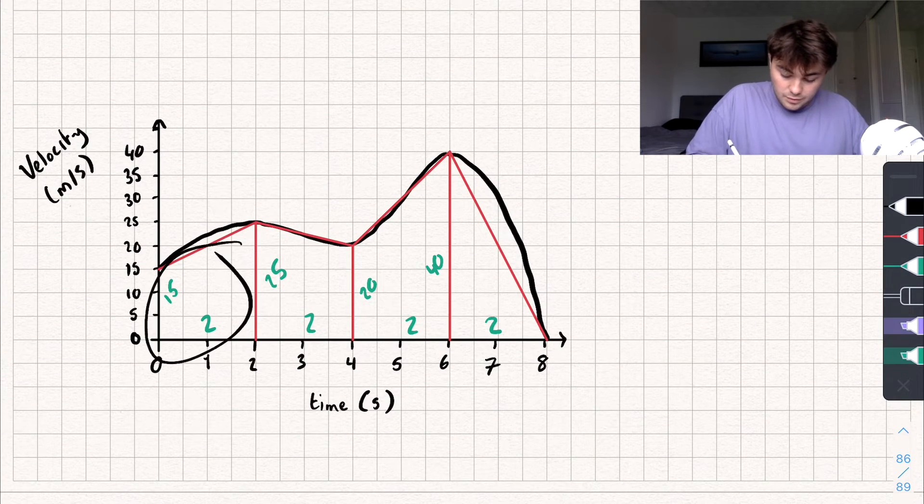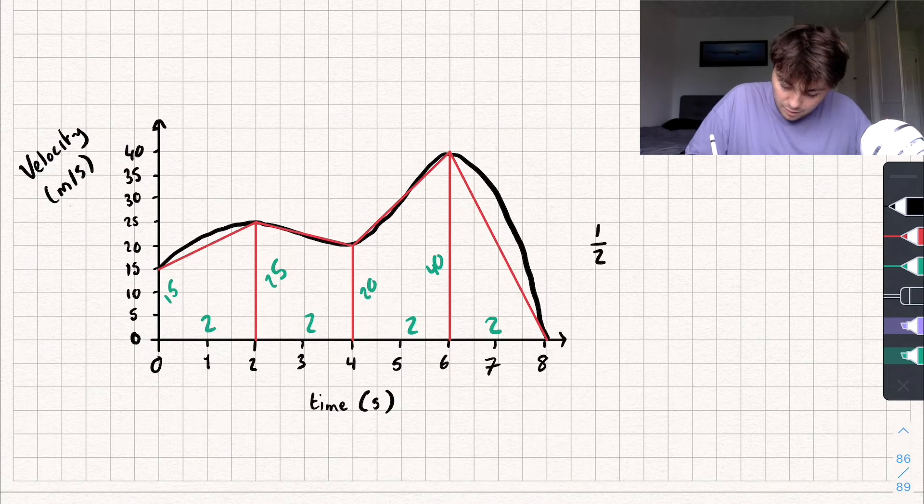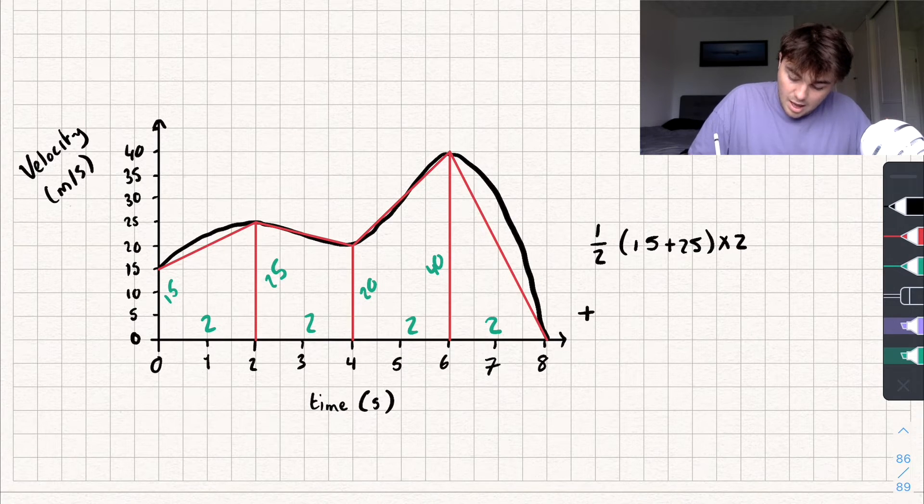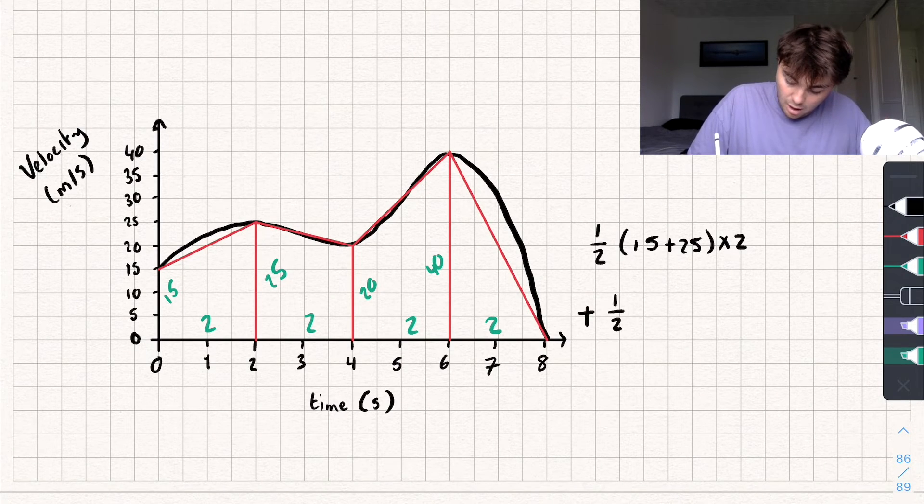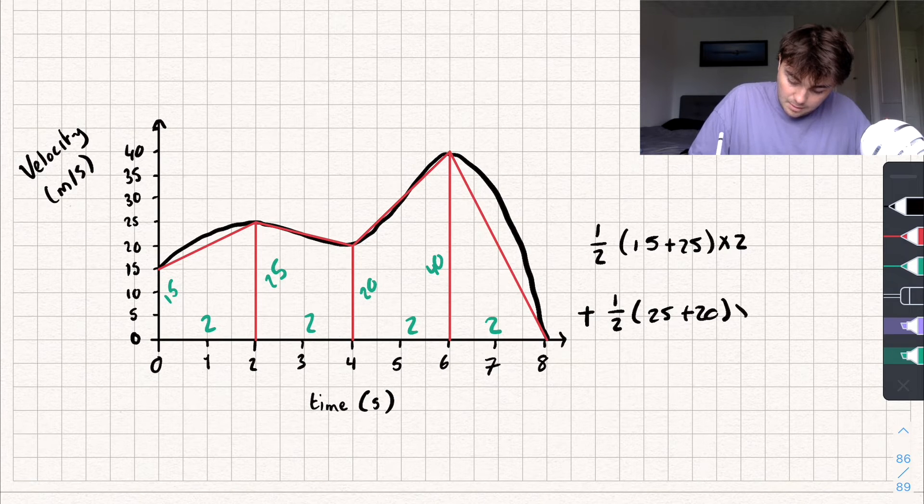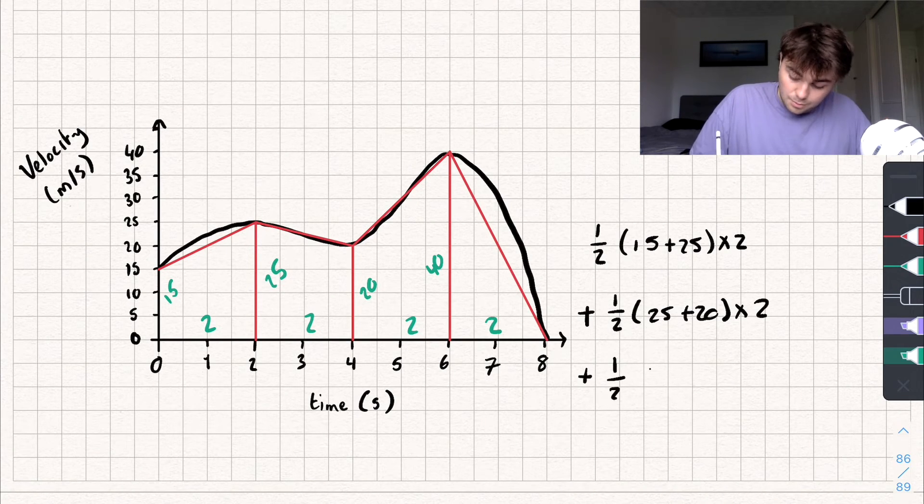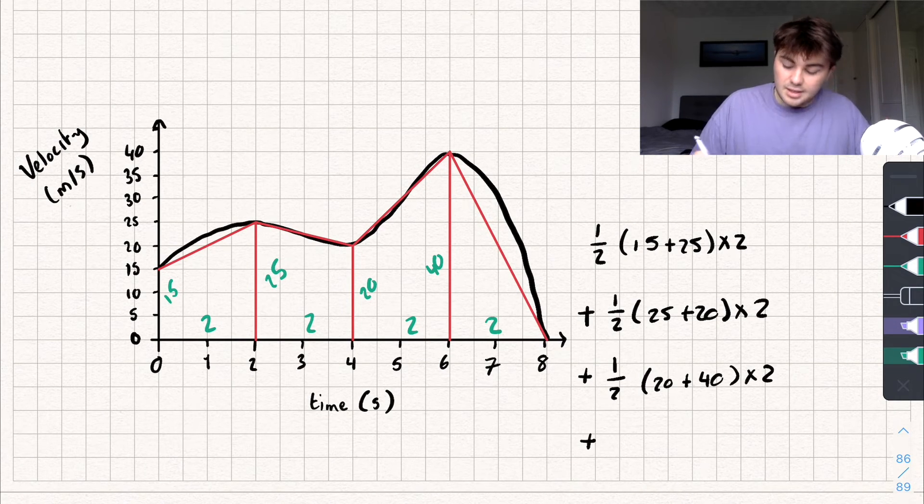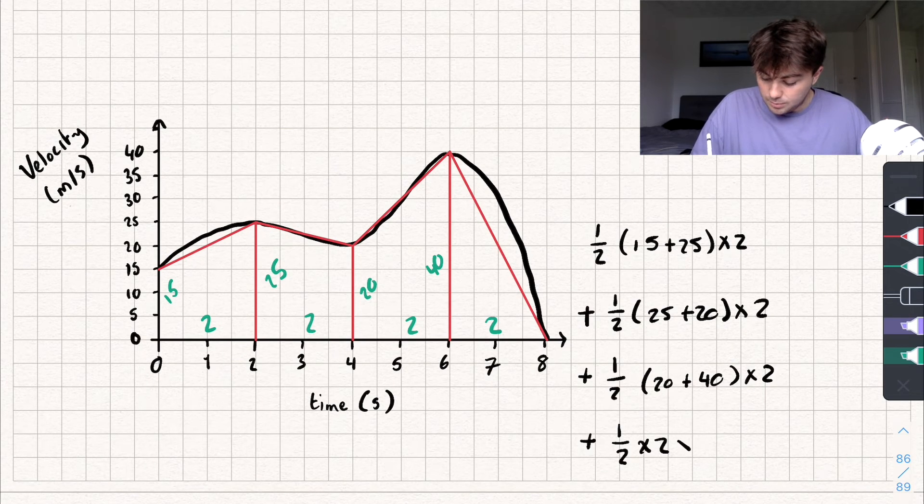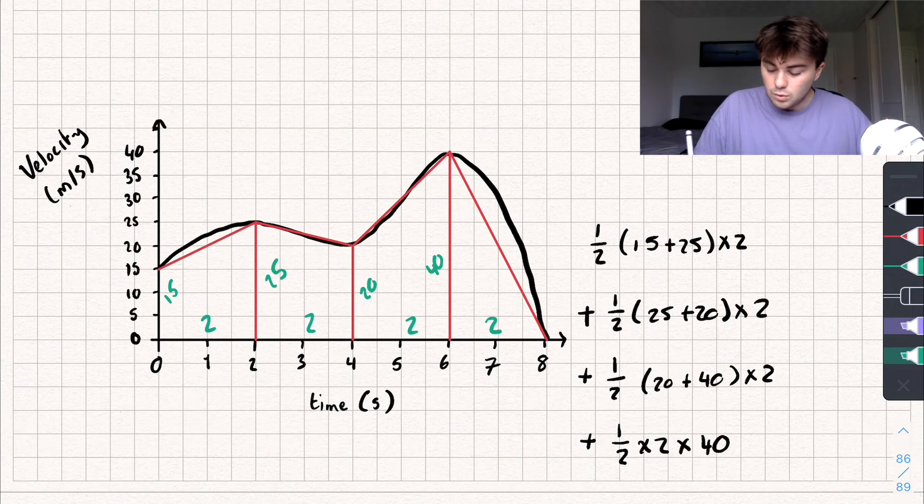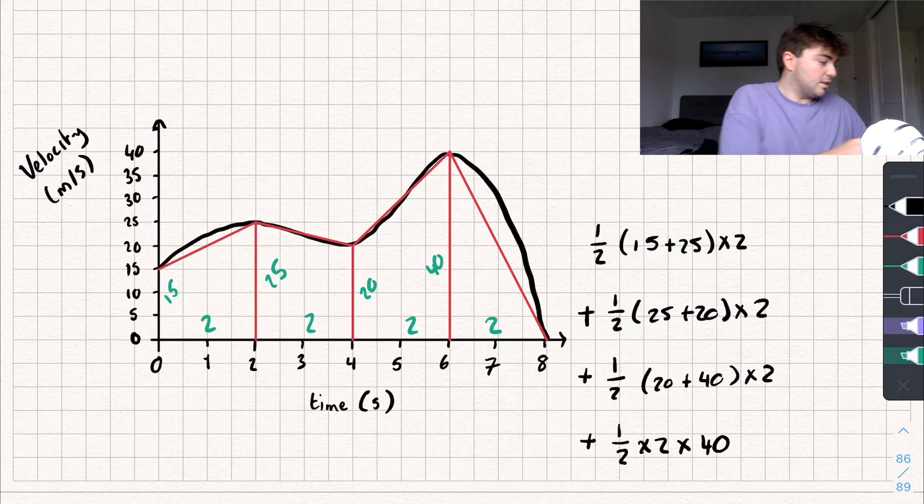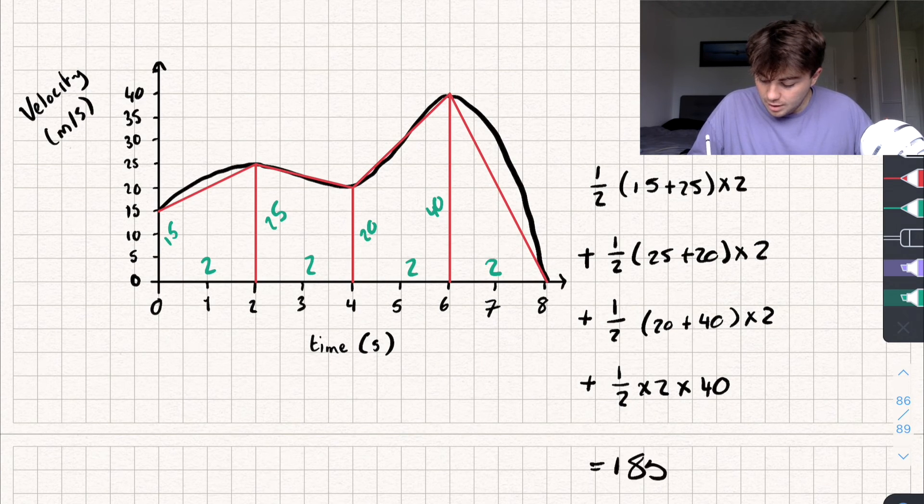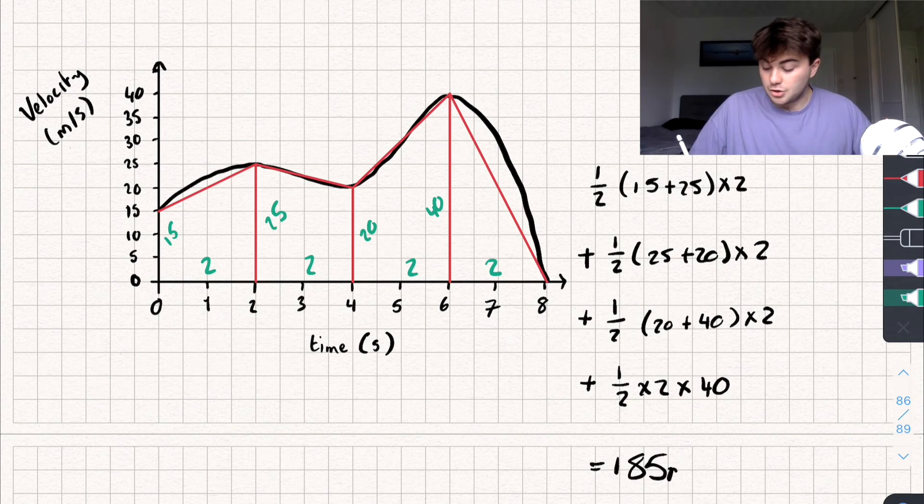So let's work it out. We're going to do for the first trapezium here, we're going to do a half a plus b. So 15 plus 25 times by the height, which is two. And then I'm going to add to that, I'm going to do half multiplied by 25 plus 20 times by the height, which is two. Plus the third trapezium, which is a half 20 plus 40 times by two. And then finally, the area of the triangle, which is a half times the base, which is two times the height, which is 40. Now I'm going to use my calculator to add all of these together. And so if we work that out, we get 185. So the distance traveled is going to be 185 meters.